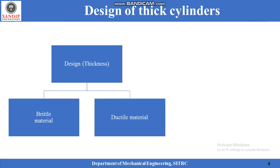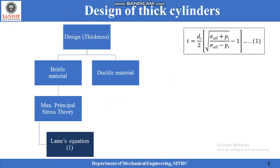While designing a thick cylinder, the first decision to be made is regarding material — either brittle or ductile. If the designer chooses a brittle material, then application of maximum principal stress theory is found to yield better results. When maximum principal stress theory is applied, the resulting equation is known as Lame's equation, which states that a material will fail if the maximum principal stress exceeds the allowable stress. The Lame's equation is given by equation number 1.